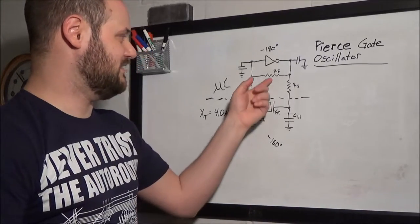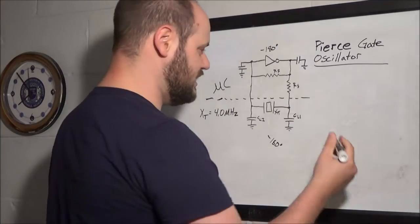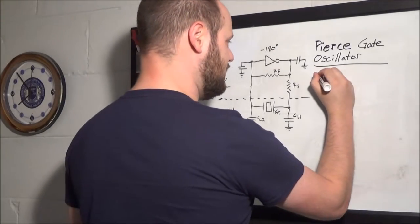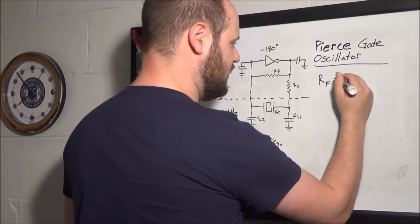But, it's going to be a linear amplifier with a 180-degree phase shift, which, as we saw, sustains the oscillations. So, this value, RF, not particularly critical. For something like this, RF equals, we're going to go with, say, 1 megohm.